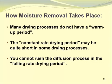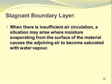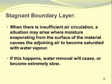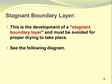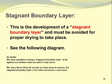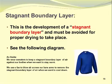We also need to consider the stagnant boundary layer. When there is insufficient air circulation, moisture evaporating from the surface can cause the adjoining air to become saturated with water vapor. If this happens, water removal will cease or become extremely slow. This is called the stagnant boundary layer and must be avoided. Just as an analogy, we wear sweaters to keep a stagnant boundary layer of air against our bodies to stay warm, and use a fan to remove it when we want to cool down.